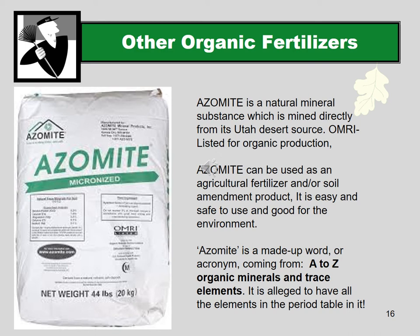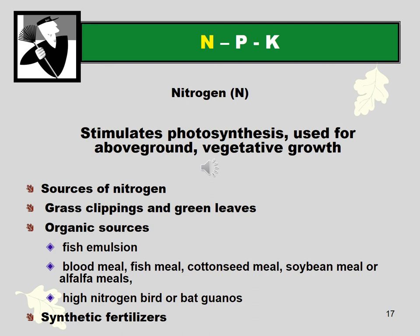Azomite is another organic natural fertilizer — low in its percentage of NPK nutrients but providing a wide range of trace elements. The name stands for 'A to Z Organic Minerals and Trace Elements.' It's mined directly from a volcanic deposit in Utah and is alleged to contain all elements in the periodic table. It's especially good for adding micronutrients to your soil.